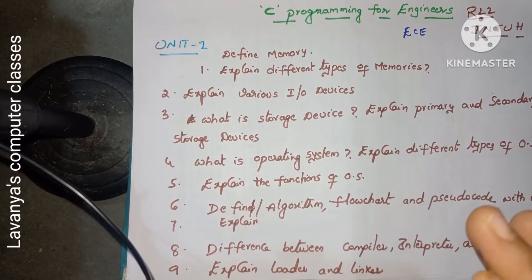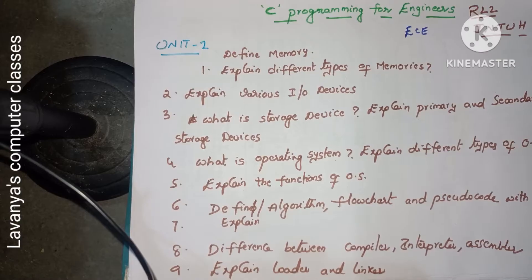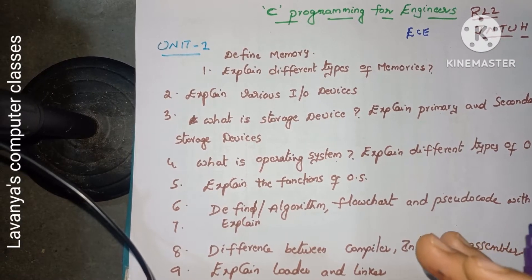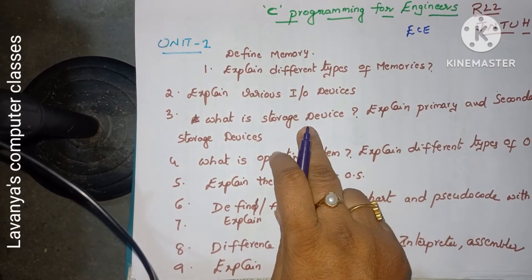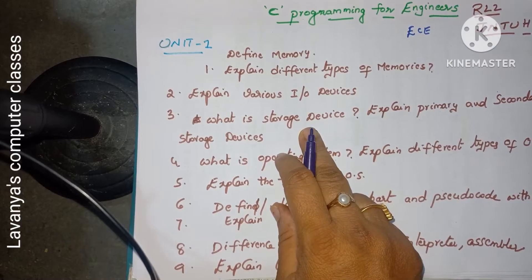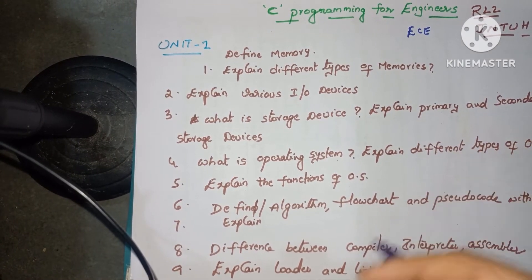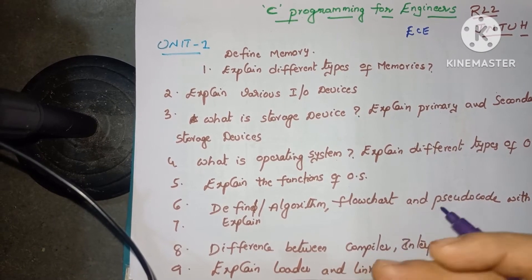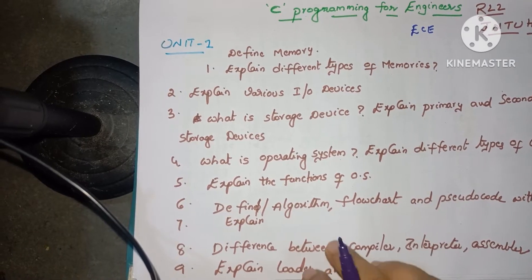Students don't need to worry about whether a question is short answer or long answer — if you read the concept, you can automatically write either type. Next: 'What is an input device?' is a short answer question. 'Different types of input devices with examples' is an essay-type question. Similarly, 'What is an output device?' and 'List different types of output devices' are short answer questions.